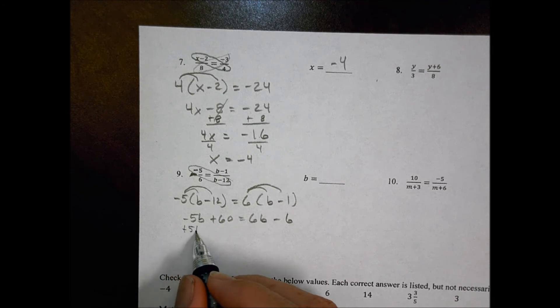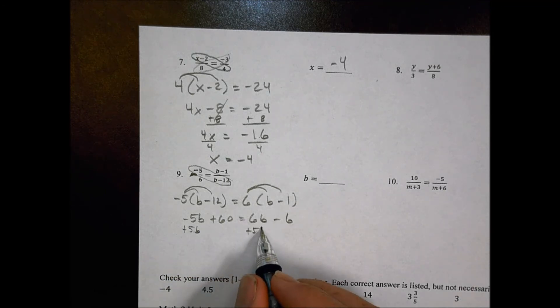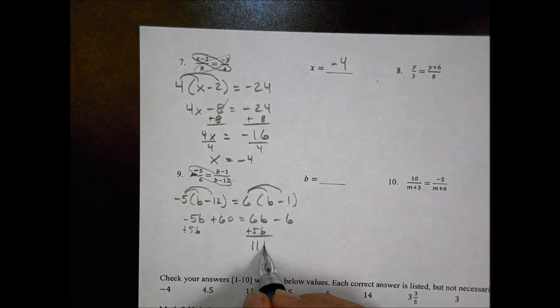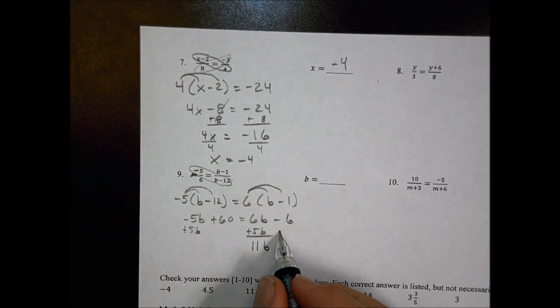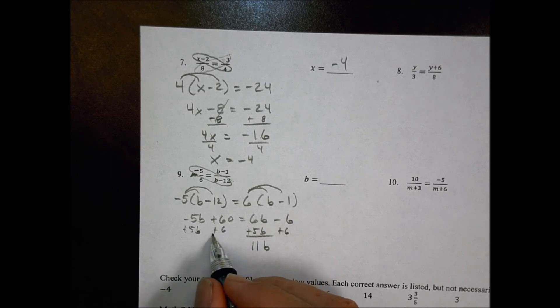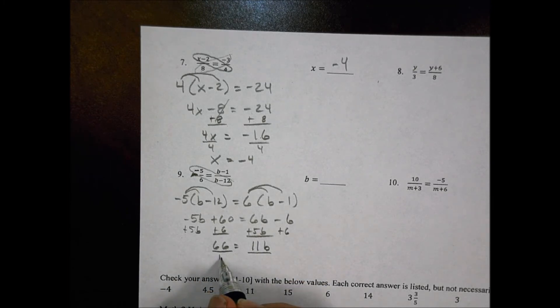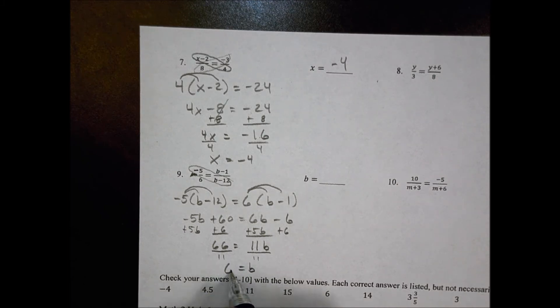I'm going to go ahead and add 5b to both sides, so I end up with a positive b. I just like a positive b better. My variable, if I keep my variable positive, I like that if I can. I'll add 6 for here, and 6 to there, so I have 66 on this side. So then I'll divide both sides by 11, so that b equals 66 divided by 11, which is 6.